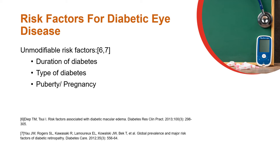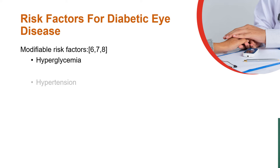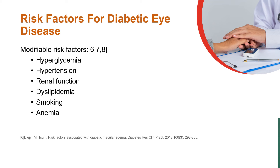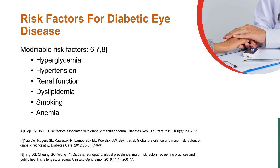The risk factors of diabetic eye disease can be unmodifiable or modifiable. Duration of diabetes, type of diabetes, and puberty or pregnancy are unmodifiable risk factors. The modifiable risk factors include hyperglycemia, hypertension, renal function, dyslipidemia, smoking, and anemia.